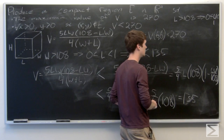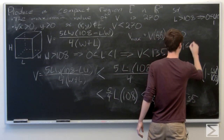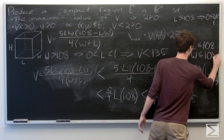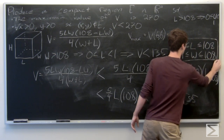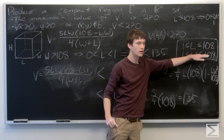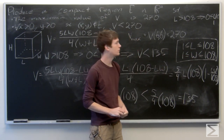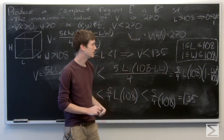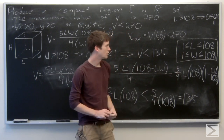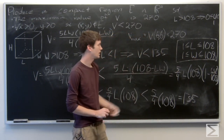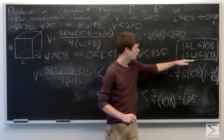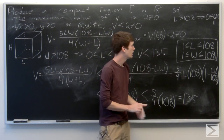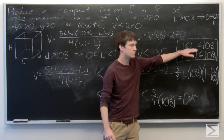Our compact region is going to be defined as L between 1 and 108 inclusive, and W between 1 and 108 inclusive. We showed that if L is more than 108, then W is less than 1 and the volume is less than 135. And if W is more than 108, then L is less than 1 and our volume is less than 135. So we produced a compact region where our volume will always be less than 135 if we're outside of it, and it obviously contains the point (6, 6) since 6 is between 1 and 108.